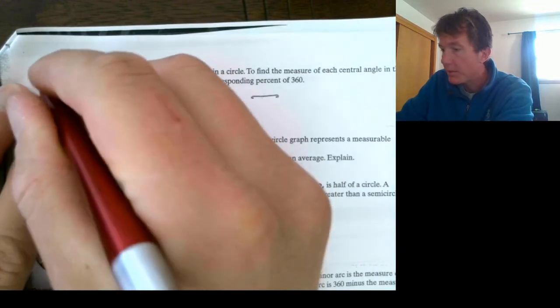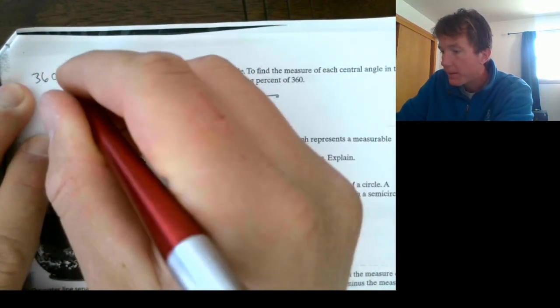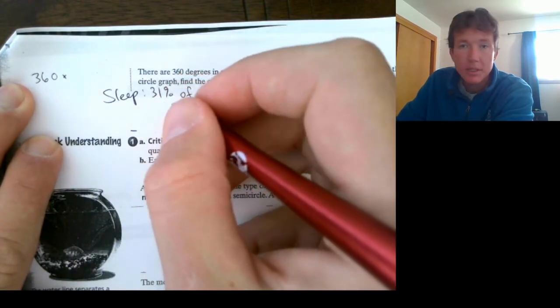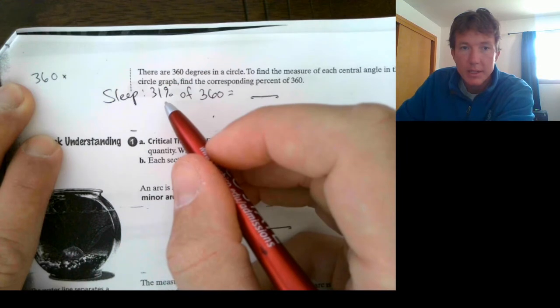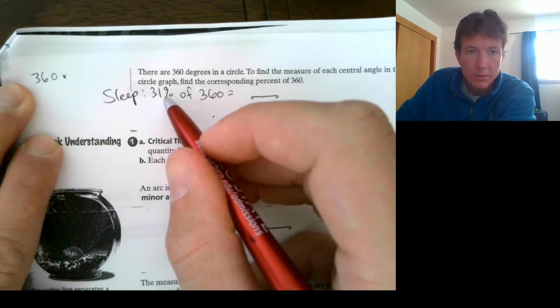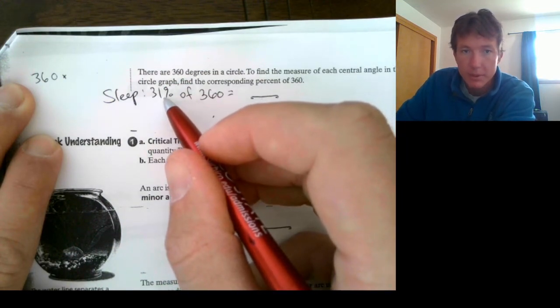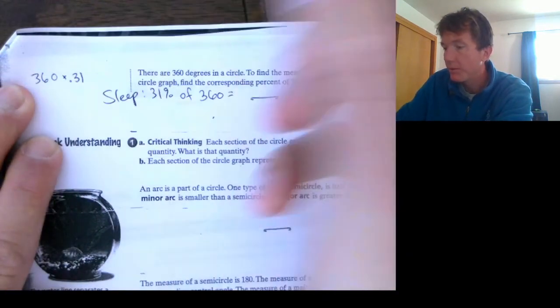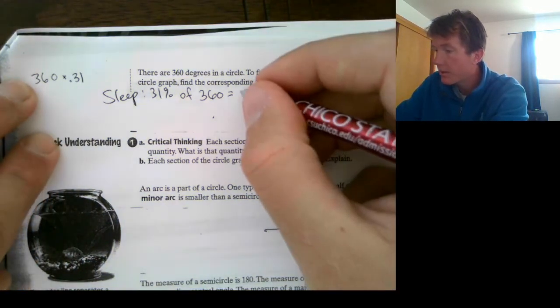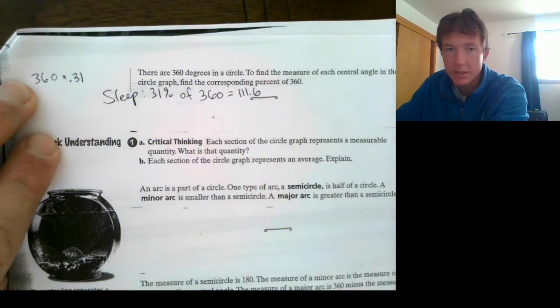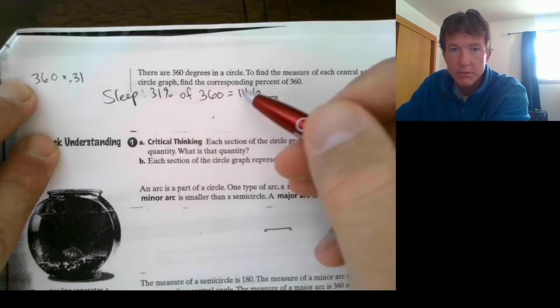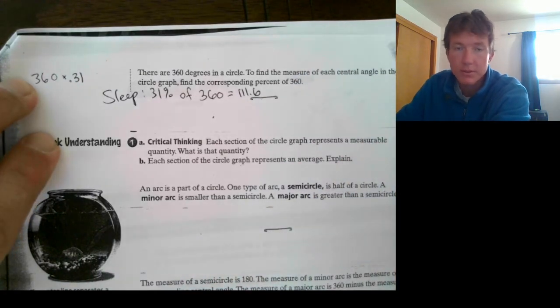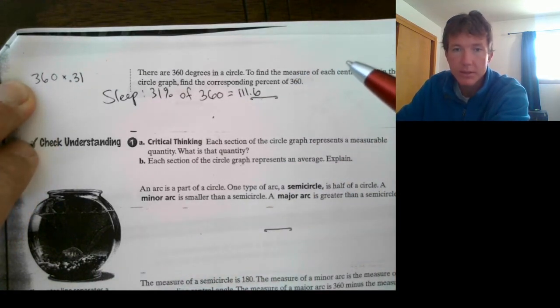The way to do this is to go into a calculator. And you just type it in just like this. You type in 360. You hit the times button. And you enter 31% as a decimal. 31% as a decimal. You're going to take the decimal, which is to the right of the one here. And we're going to move it to the left two places. So, you're going to multiply that by 0.31. And you should get 111.6. So, sleep would be basically 111 degrees. If we're thinking of a circle, it's 360 degrees. Sleep is 111 degrees.